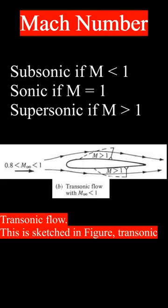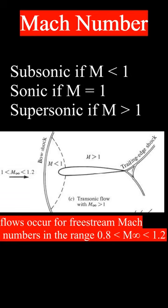Transonic flow: this is sketched in the figure. Transonic flows occur for freestream Mach numbers in the range 0.8 < M < 1.2.